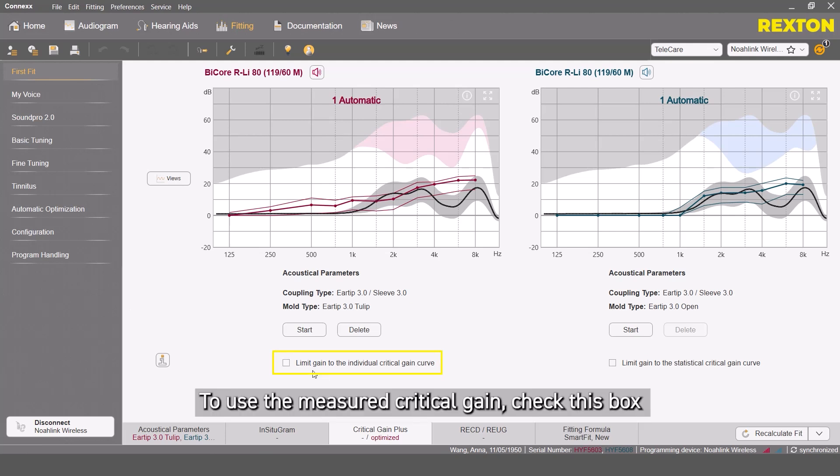The ideal critical gain curve looks like this. To use the measured critical gain, check this box and the status on the tag changes to In Use.